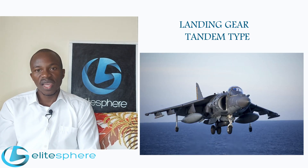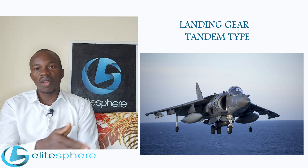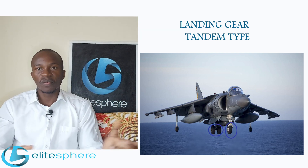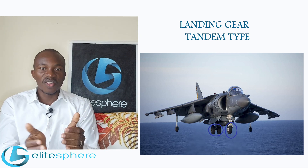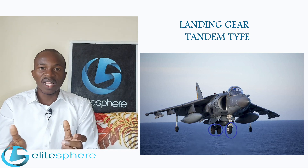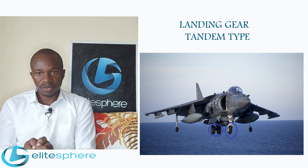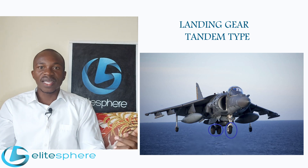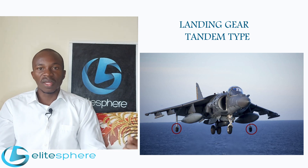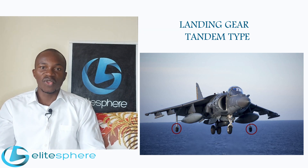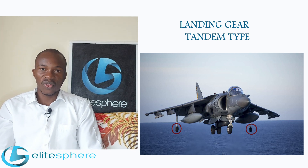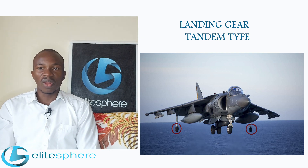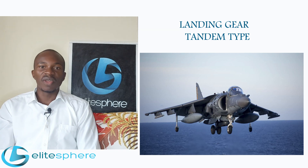For the tandem type landing gear configuration, the wheels are installed along the longitudinal axis of the aircraft, that is from the nose to the tail. One landing gear is near the nose and one is near the tail of the aircraft. To support the weight of the wings, these aircraft are fitted with outrigger landing gears as auxiliary landing gears. This configuration is found mostly on sailplanes and on military bomber aircraft.